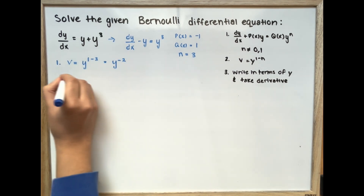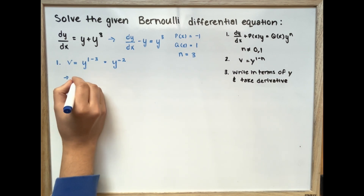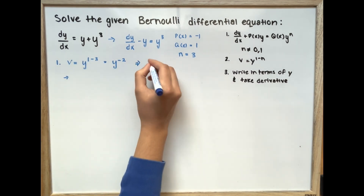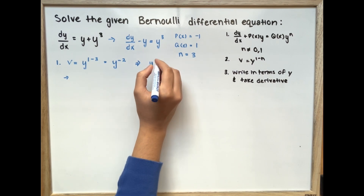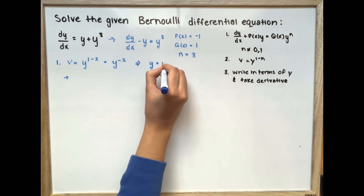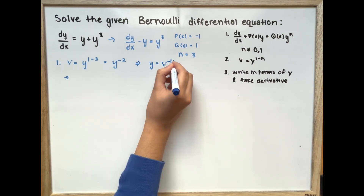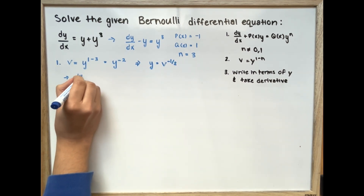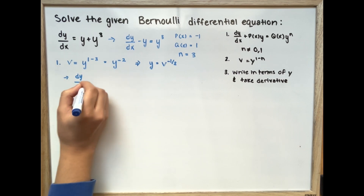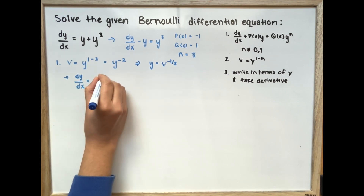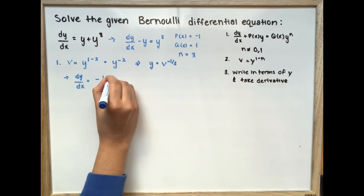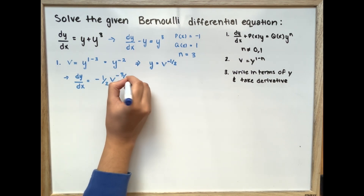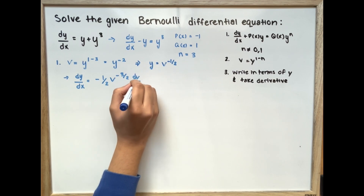Before we take the derivative we're going to write it in terms of y, so we have y equal to v to the power of negative one half. Now we can take the derivative: dy/dx is equal to negative one half times v to the power of negative 3/2 times dv/dx.